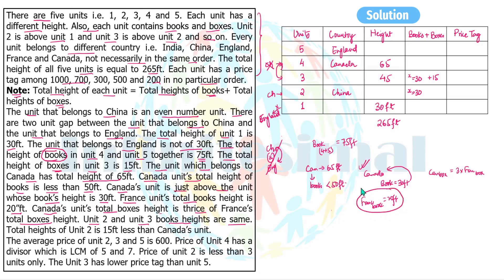With Canada fixed at unit four, France's books height is 20 feet. The remaining positions for France are unit one and unit three. Unit three's books height is 30 feet (x = 30), but France's books height is 20, so France must be unit one and India becomes unit two. With France's books = 20 and unit one total = 30, France's boxes height = 10. Then Canada's boxes = 3 × 10 = 30, and Canada's books = 65 − 30 = 35.